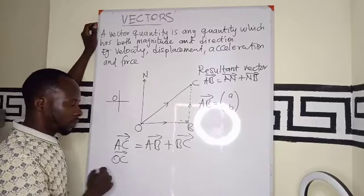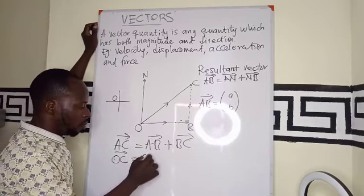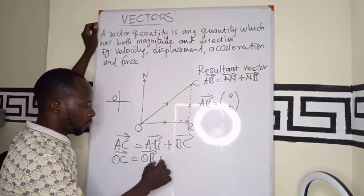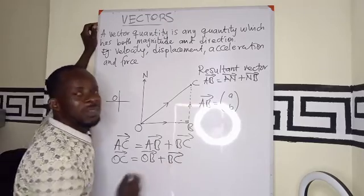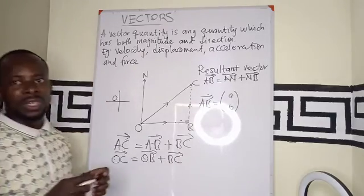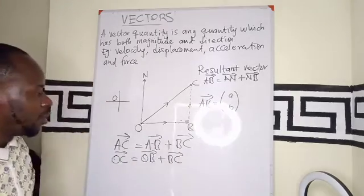So here I'll be having vector OC equals to vector OB plus vector BC. So we are just changing the position of A with O.